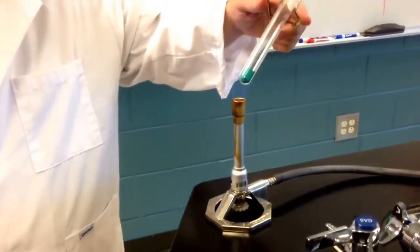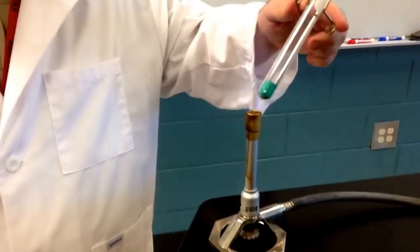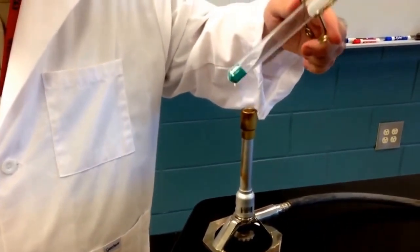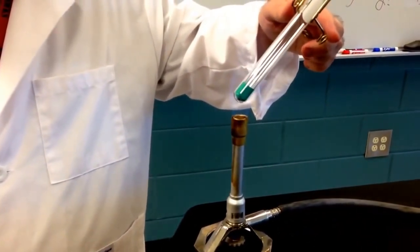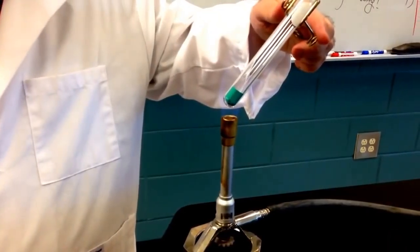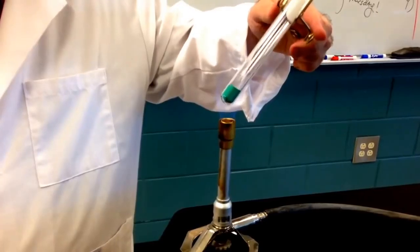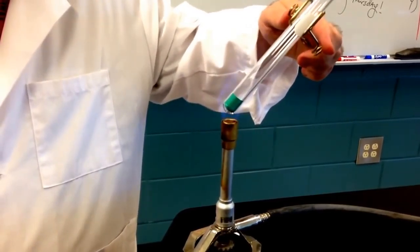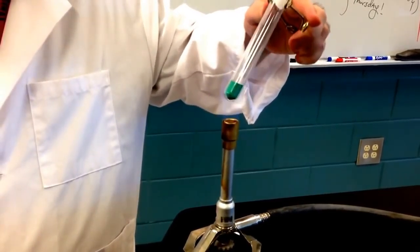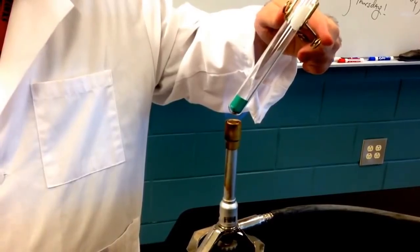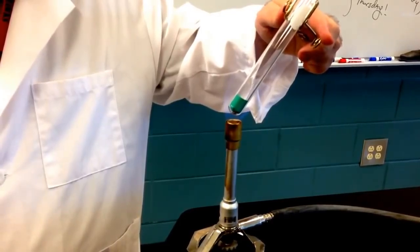Heat the copper 2 carbonate in the flame until you start seeing some movement in the powder. And again, just remember to point the test tube away from yourself, away from others. And it takes just a minute for it to heat up.